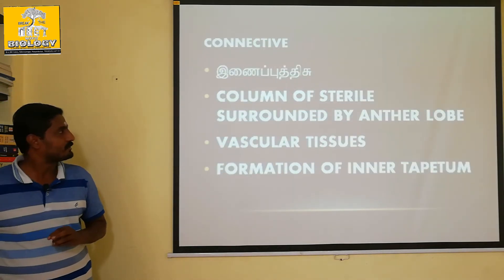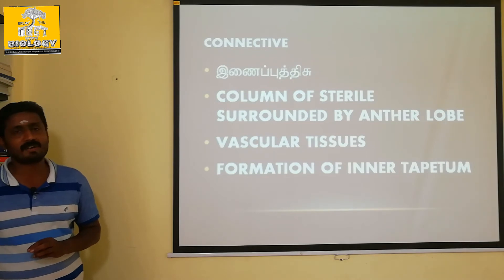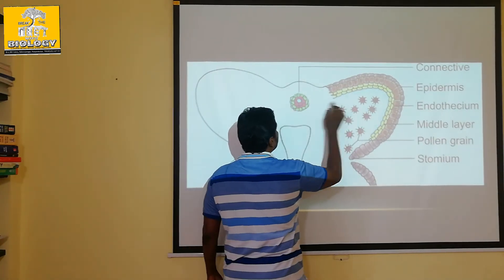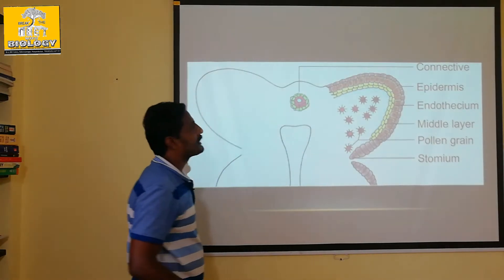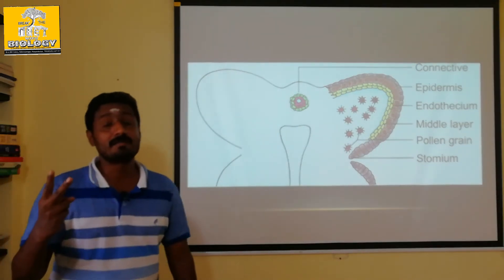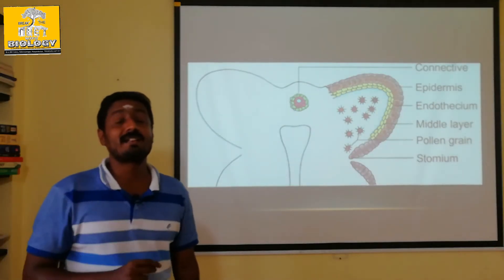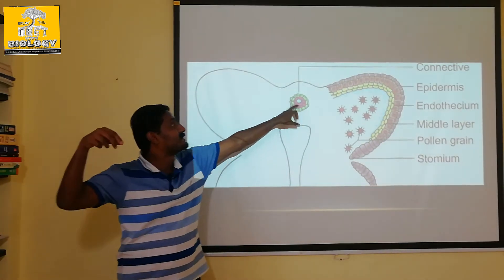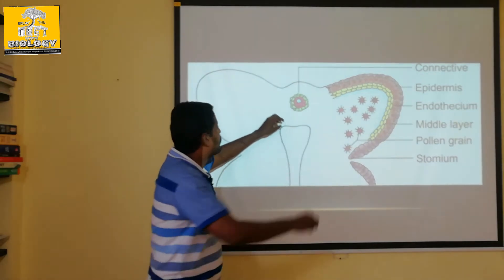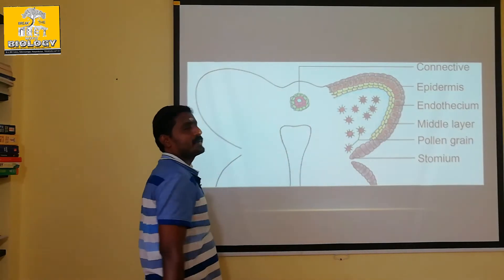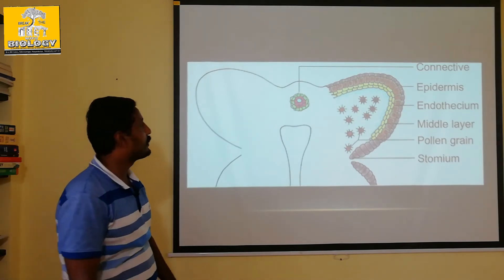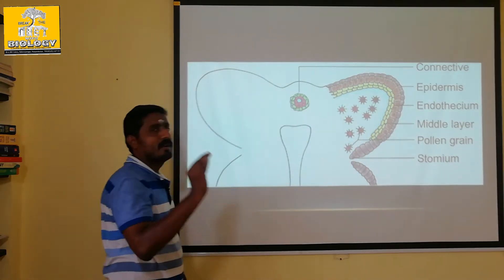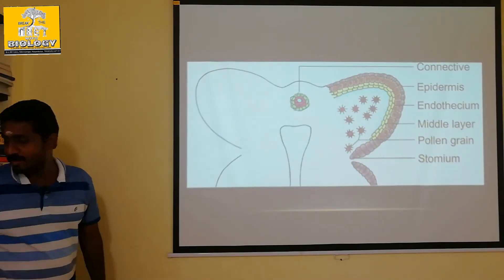Now, what is the anther cavity and what does it do? The anther cavity contains vascular bundles, through which water molecules are spread. Food materials are also transported through it.